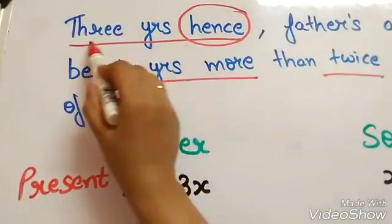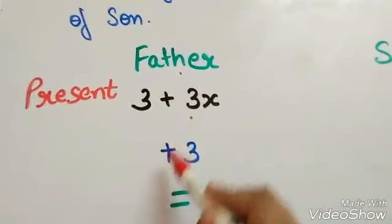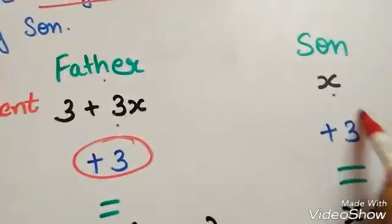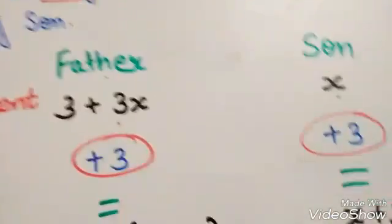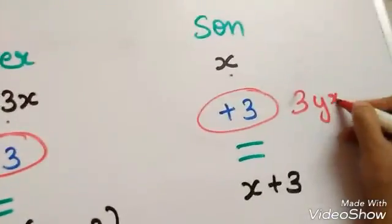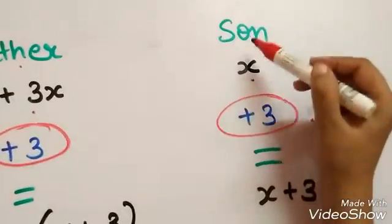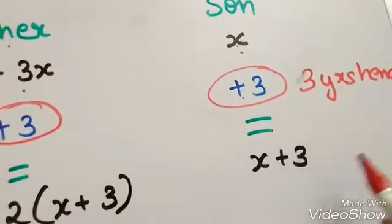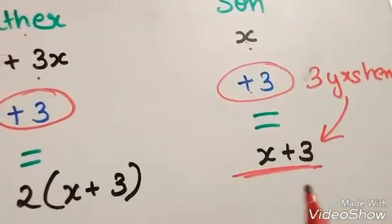Now we are talking about 3 years hence, that is after 3 years. So after 3 years, son's age will be x plus 3.